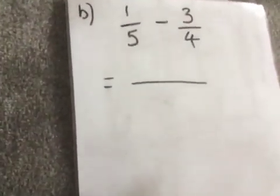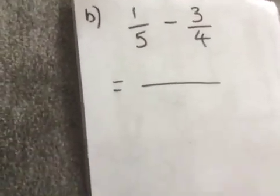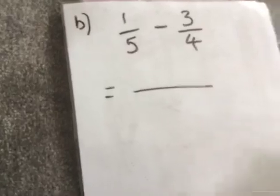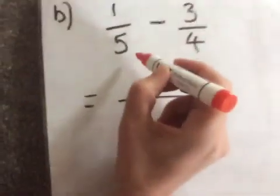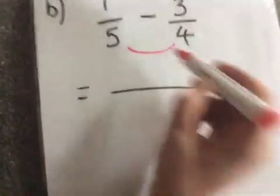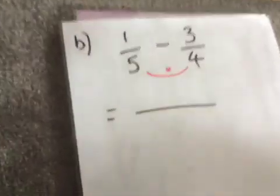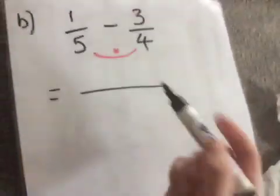Now if we look at a second example, we've got 1 fifth take away 3 quarters. So it's the same process again. We're going to smile. So 5 times 4 gives us a denominator of 20.